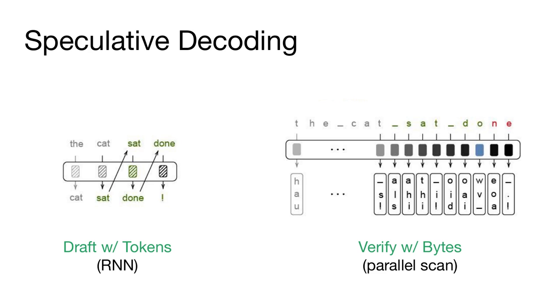Okay, so this approach is known as speculative decoding. We're going to have a draft model that is a standard tokenization-based recurrent neural network. This model will generate one token at a time, left to right. We'll start with the words 'the cat,' and this model will generate the word 'sat' and 'done.' Once we have these generations, we're going to verify them using our byte-level model.